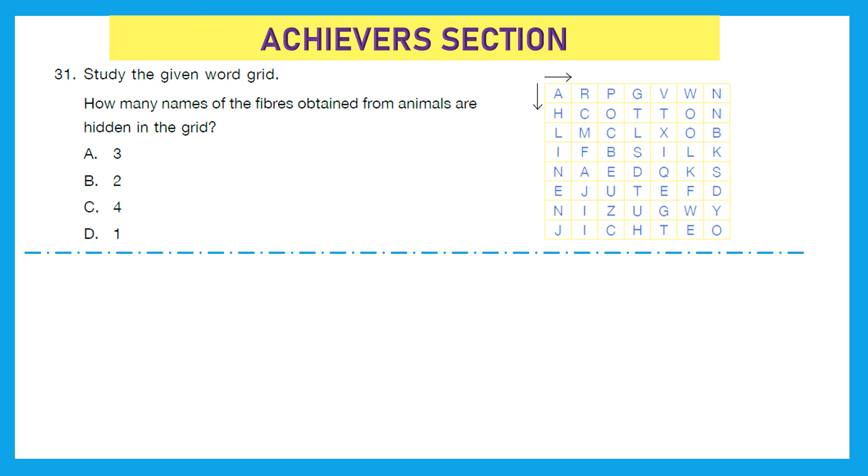Moving to the last section that is achievers section and it holds double marks for each question. Question 31: Study the given word grid. How many names of the fibers obtained from animals are hidden in the grid? So, we have to find the fibers that are obtained from animals not plants. Let's move from left to right and I got one. Then, it is S-I-L-K silk. We get that from silkworm. Then, nothing from left to right. Now, I will move from top to bottom and I got wool. Wool is something which we primarily get from sheep. So, in total we got two names of the fibers that are obtained from animals. Option B is the right answer.